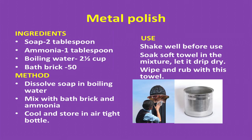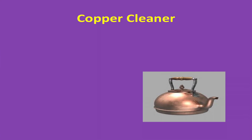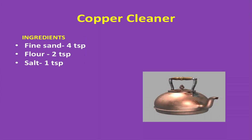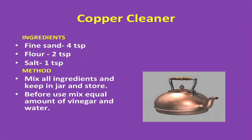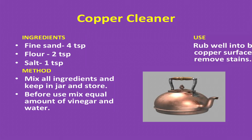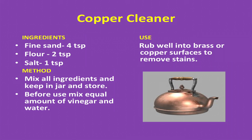Copper cleaner — ingredients: fine china clay 4 teaspoons, flour 2 teaspoons, salt 1 teaspoon. Method: mix all ingredients and keep in a jar. Moisten a small amount of the mixture to a paste using equal amounts of vinegar and water. Use: rub well into brass or copper surfaces to remove stains.